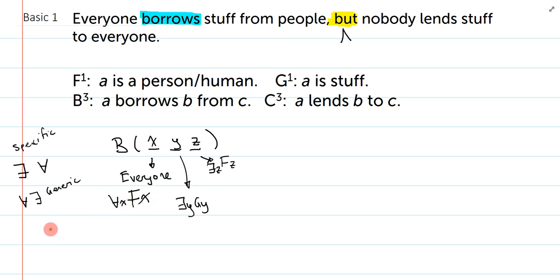So I'm basically just going to go left to right here using the canonical form. For all X, FX arrow. Now I will introduce exists Y, open bracket, GY and, which is the canonical form. Now I introduce the Z, exists Z, open bracket, FZ and, and now I'm ready to write my relation of borrowing.